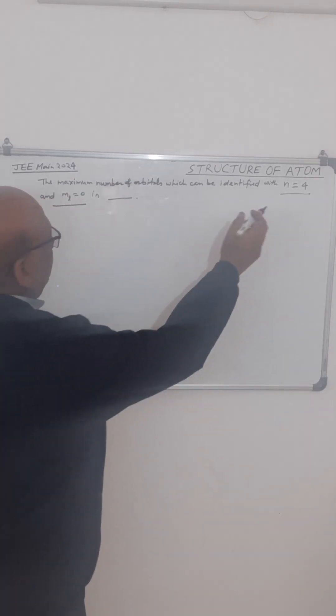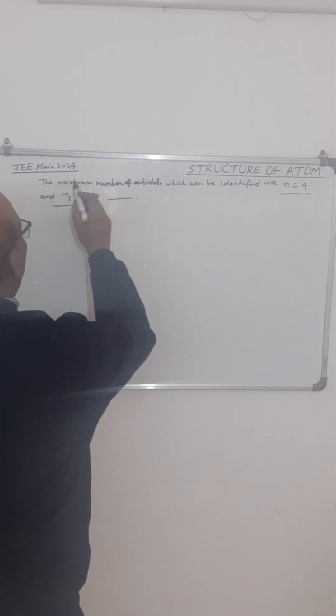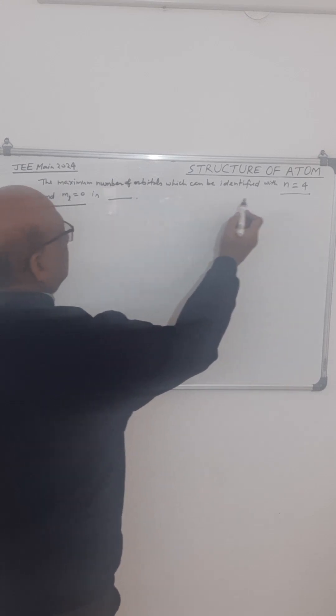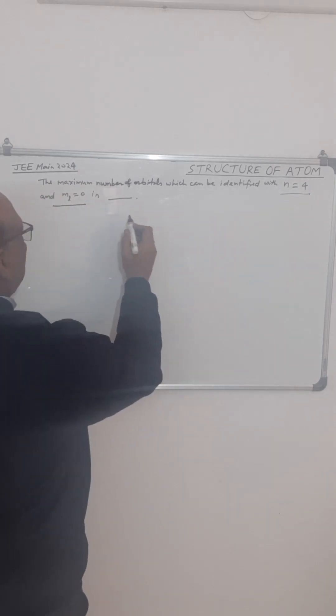Good morning, this question related to structure of atom was asked in JEE Main 2024. The maximum number of orbitals which can be identified with n equal to 4 and ml equal to 0 is: